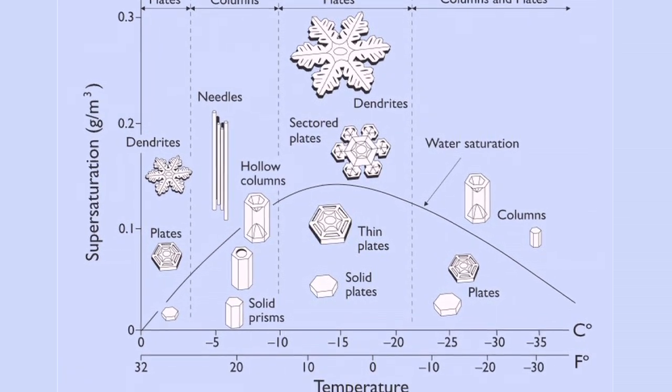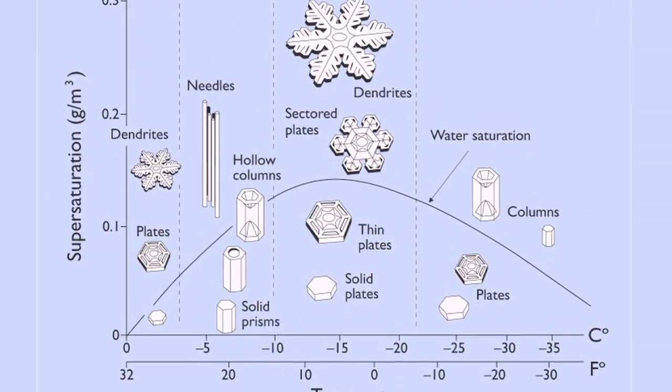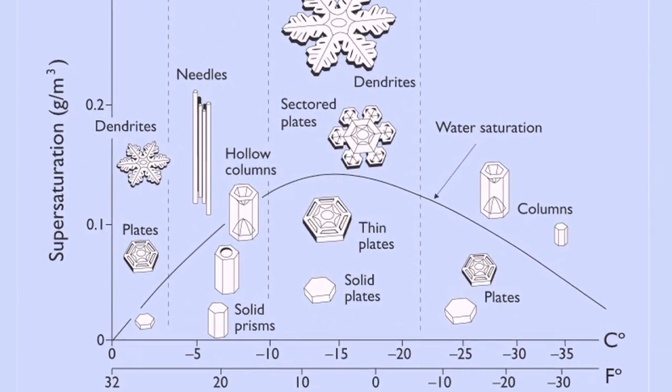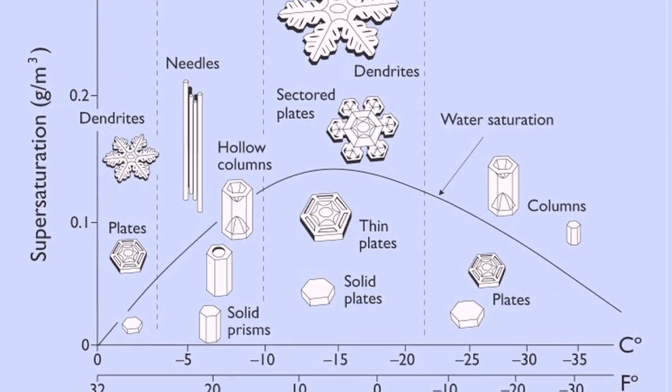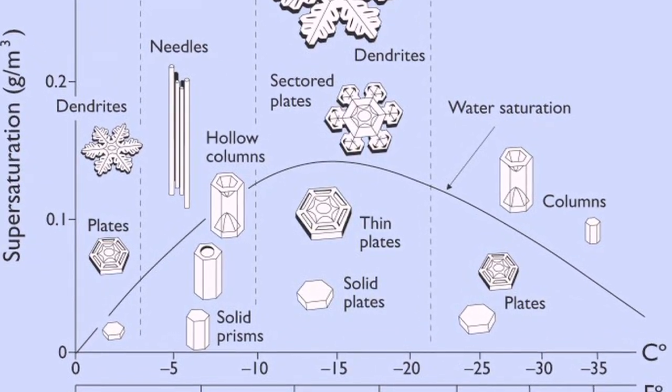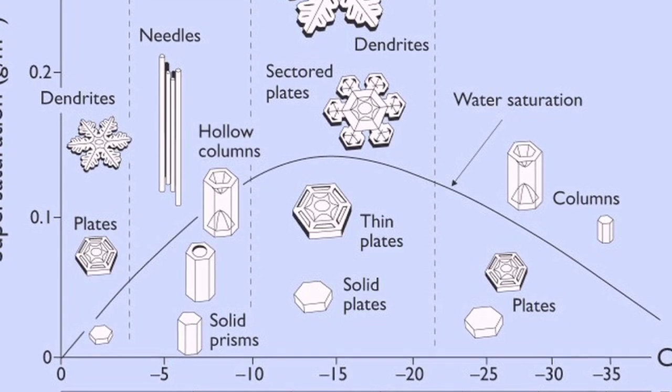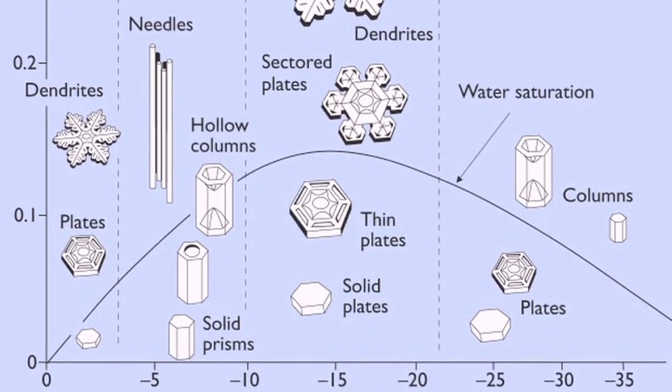But the water vapor is used up before you get to those low temperatures, so not too much grows really low on the string. Is it known why certain temperatures breed certain shapes? No, this is not understood at all, in fact. Why the growth of ice depends so sensitively on temperature.